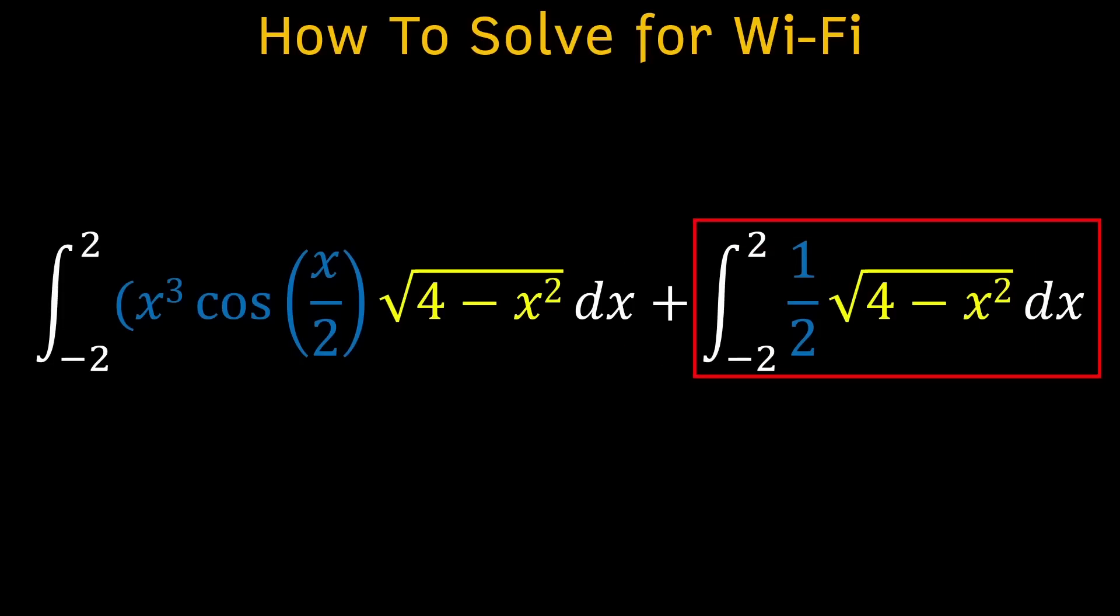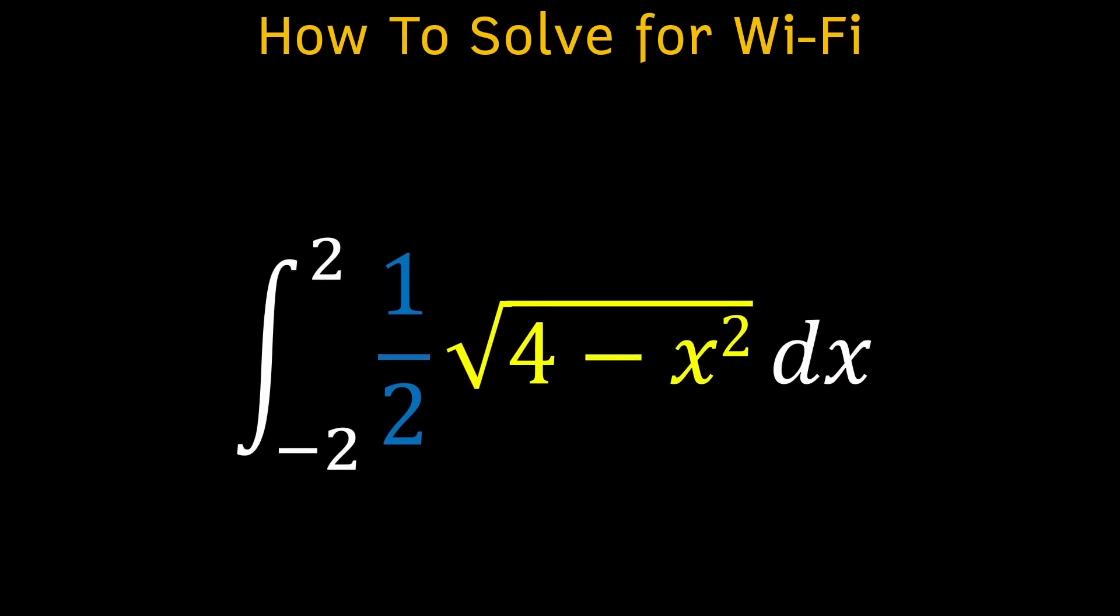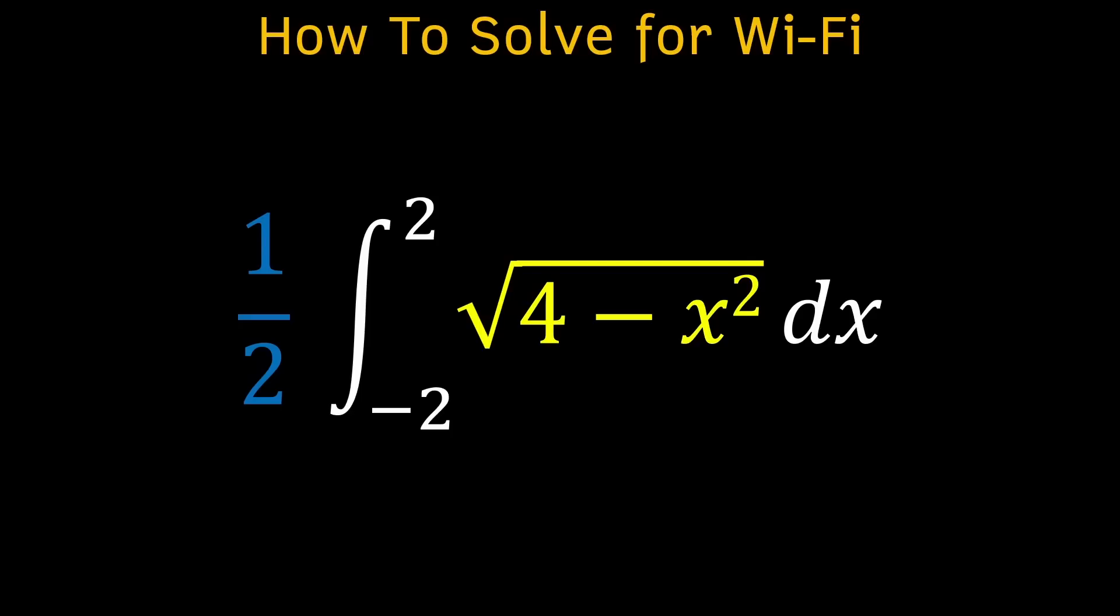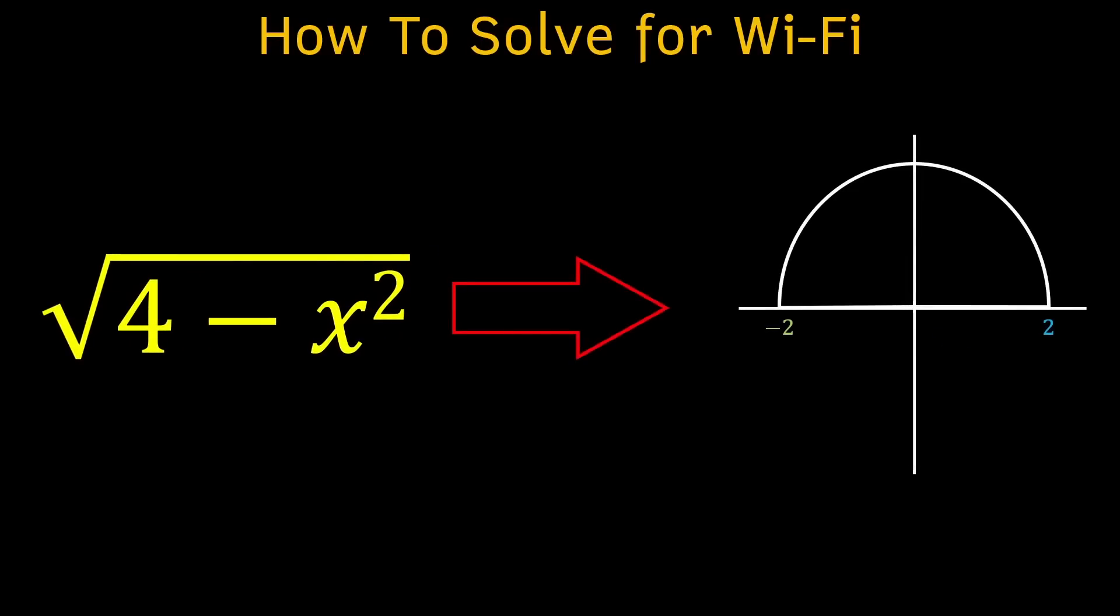Let's start with the one on the right because it seems easier. Because this one half is a constant, we can pull it outside the integral and we're left with the square root of 4 minus x squared. If you're familiar with geometric equations, you might recognize that this represents the top half of a circle with a radius of 2.